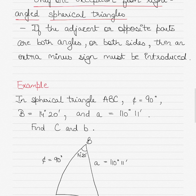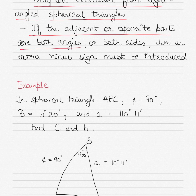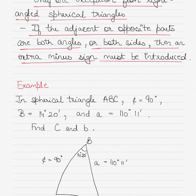When solving Quadrant Triangles using Napier's rules, if the adjacent or opposite parts are both angles, so if you form an equation where on your right-hand side you have both angles or both sides, then you will introduce an extra minus sign or negative sign. I will show you in the example below.